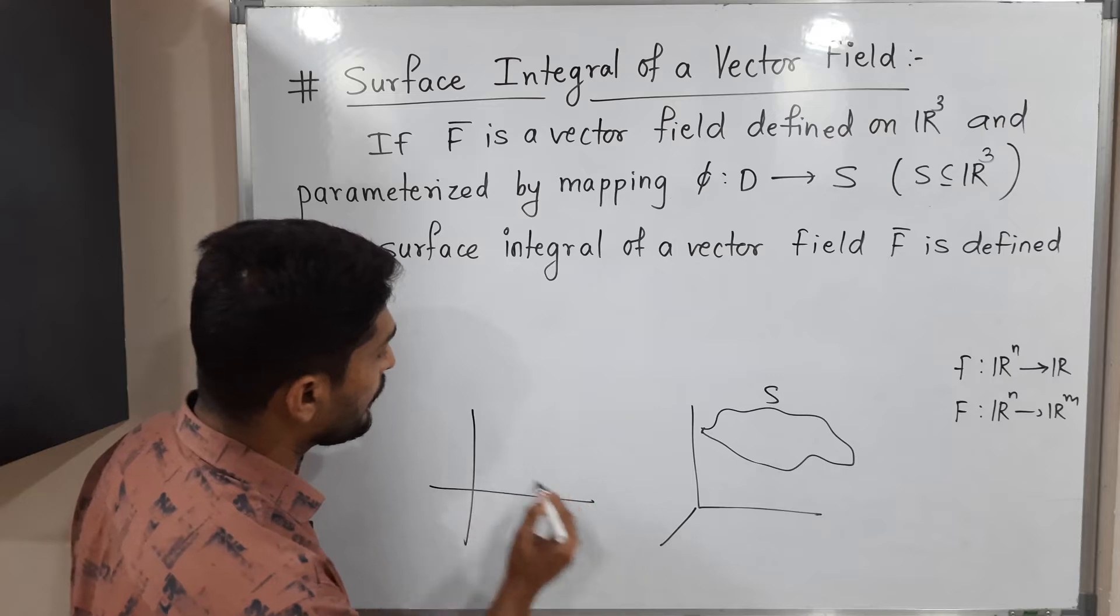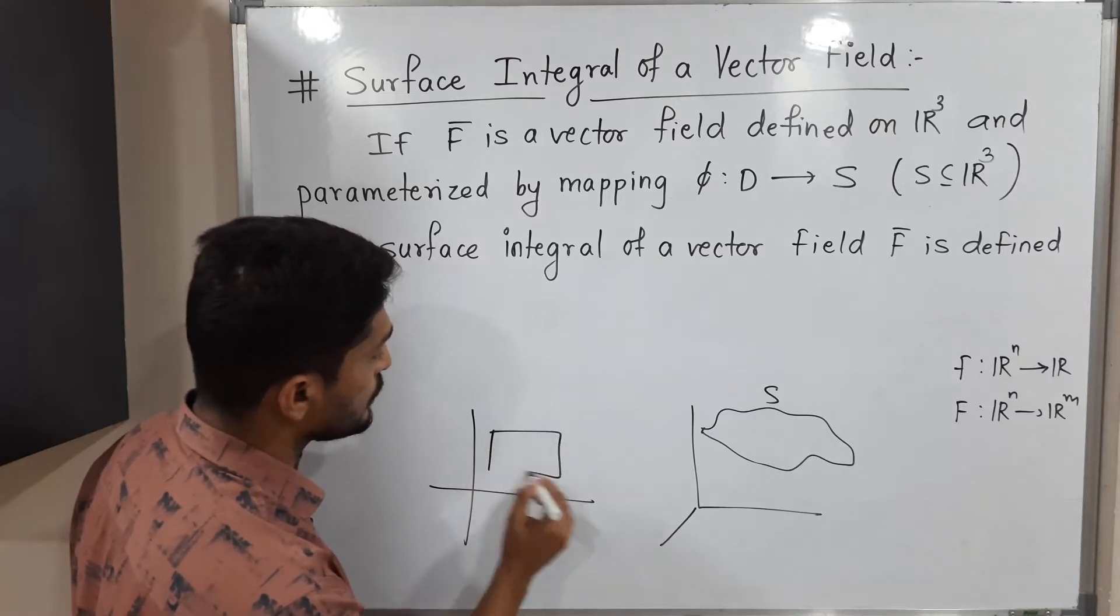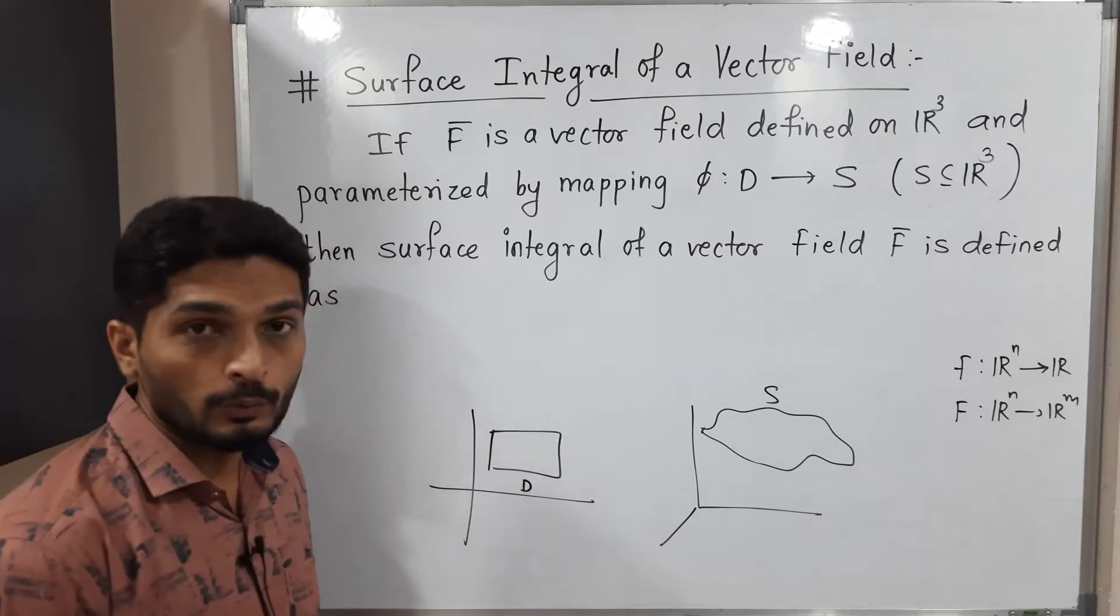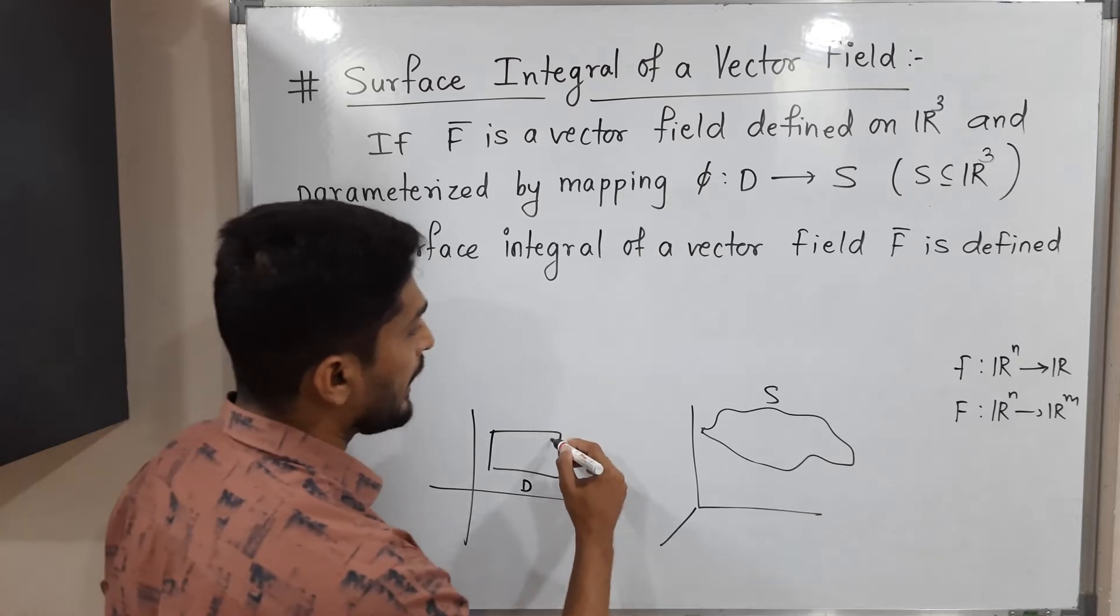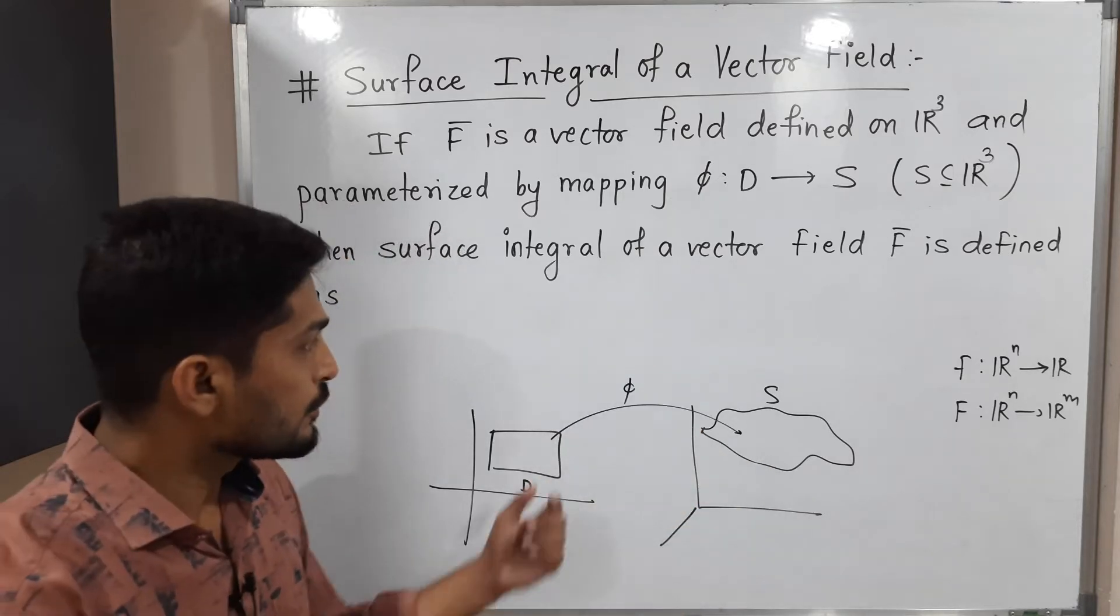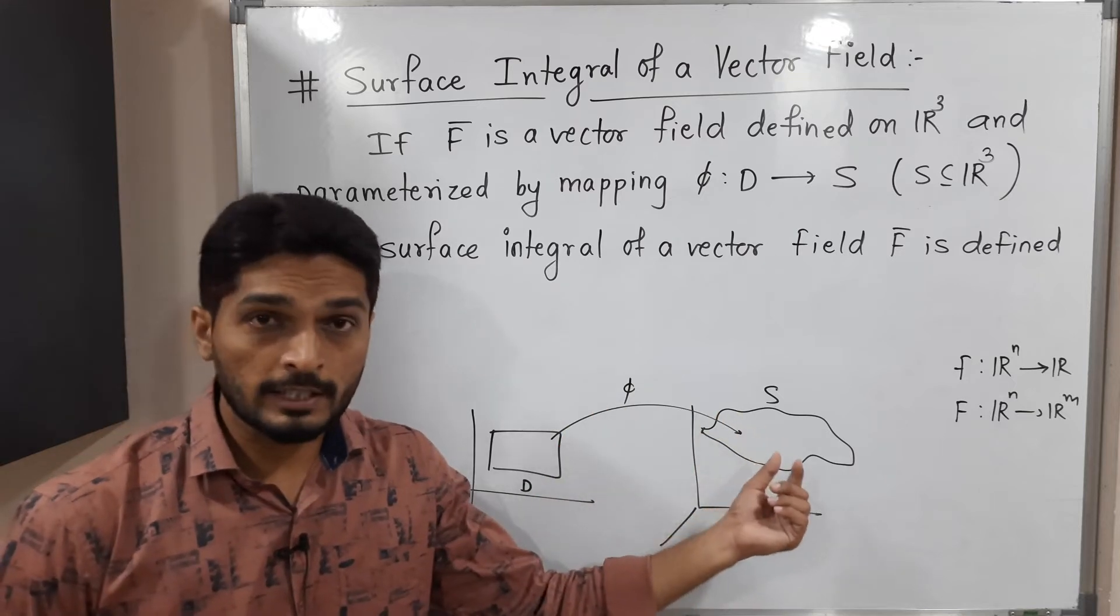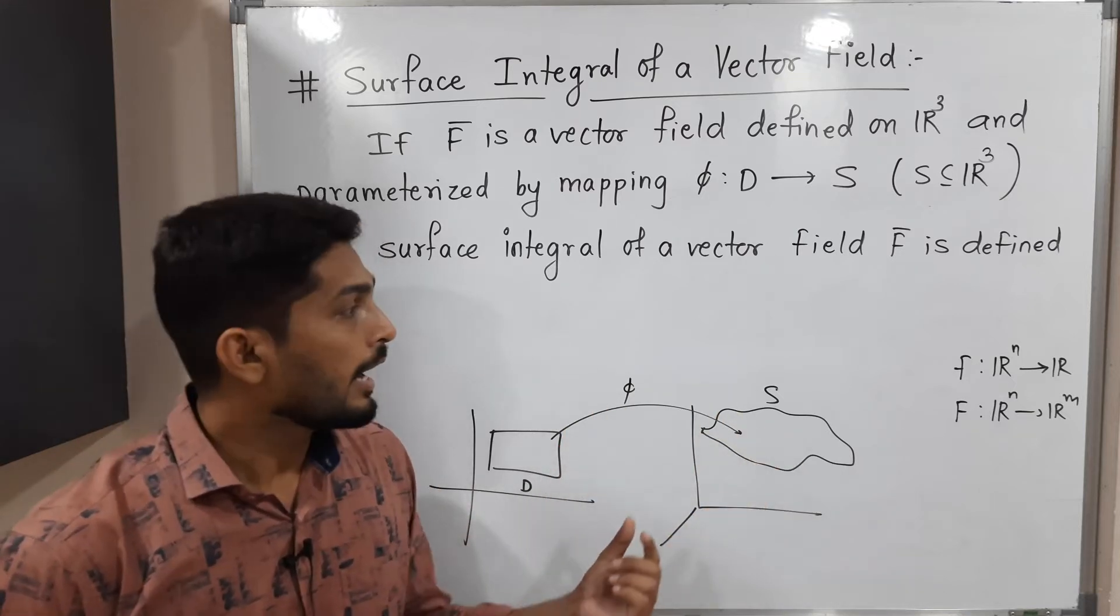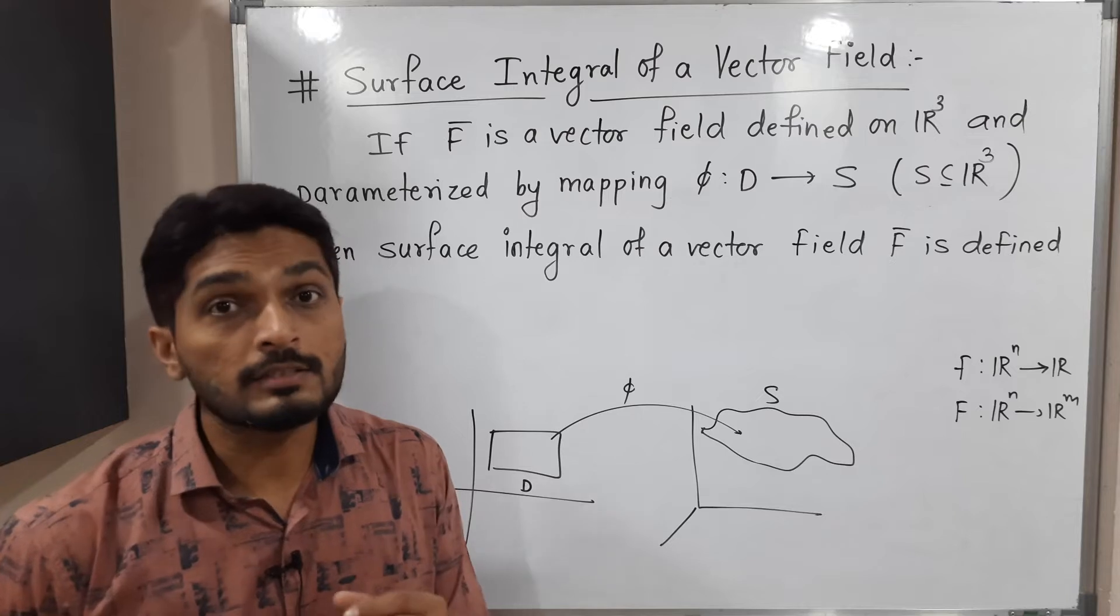So that means we take one domain D. Suppose this is domain D we have in R2. And we find a parametrization of that surface S. We are calling it as phi. So phi is a parametrization of surface S which is defined on domain D.